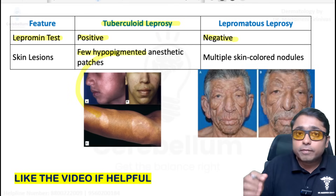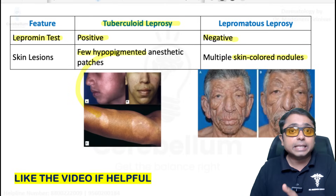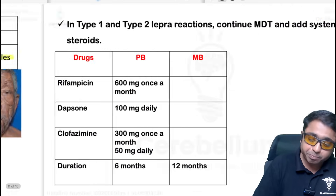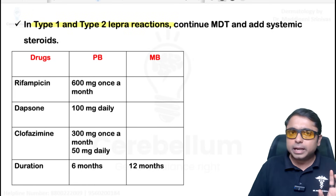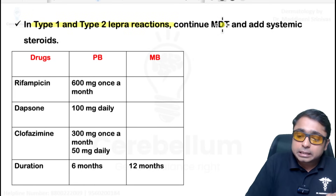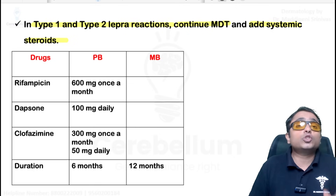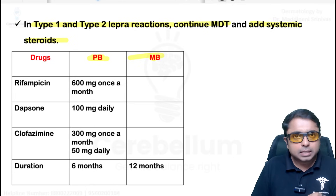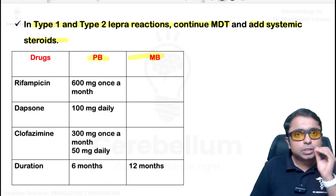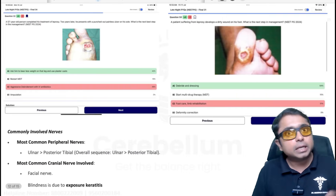In lepromatous leprosy, the patient's face looks like a lion — leonine facies — due to multiple skin-colored nodules over the face. Leprosy reactions type 1 and type 2 are both treated with steroids, and multi-drug therapy (MDT) must be continued without stopping. MDT is the same for paucibacillary and multibacillary patients: rifampicin, dapsone, and clofazimine. The only difference is duration — 6 months for PB and 8–12 months for MB leprosy.